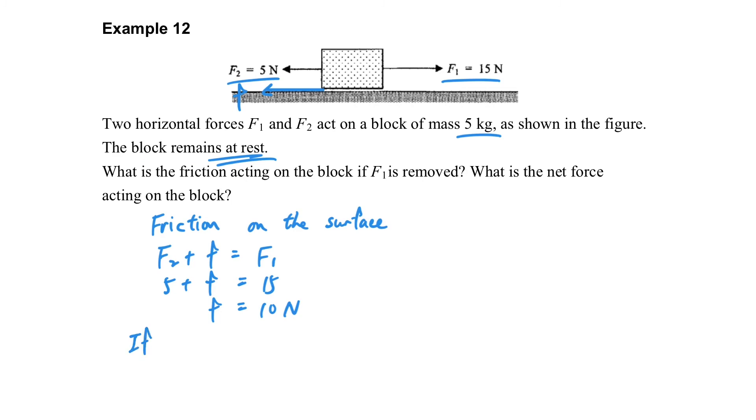What if F1 is removed? If F1 is removed, the only applied force acting on the block is F2, which is 5N. So in this case, what should be the friction? The friction should be 5N also, but towards right. And the net force will be equal to zero.